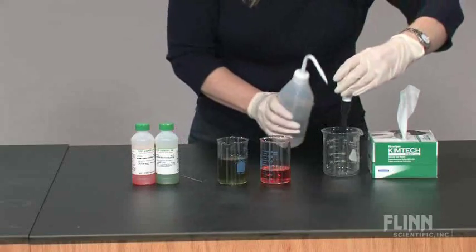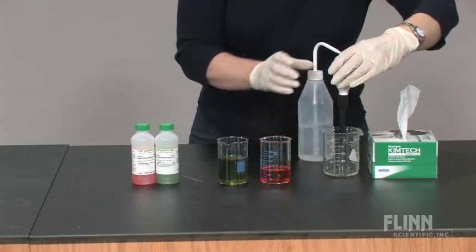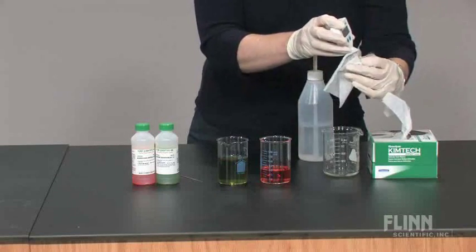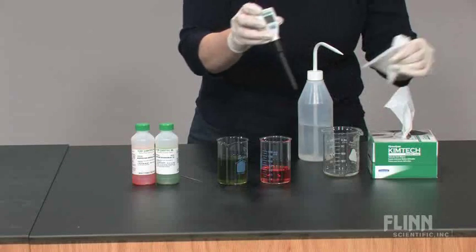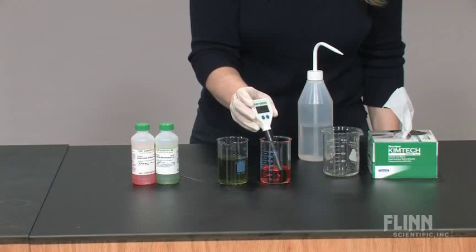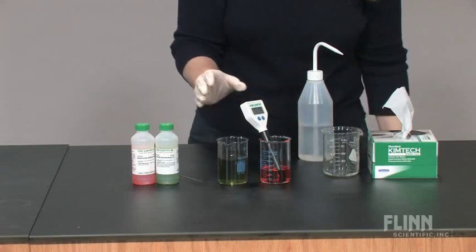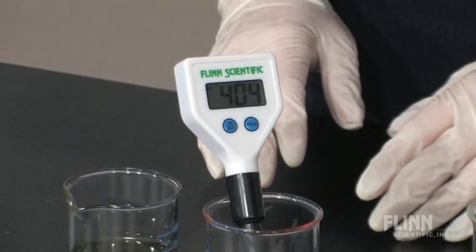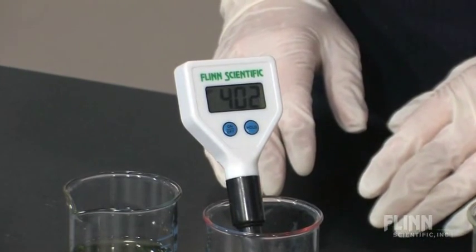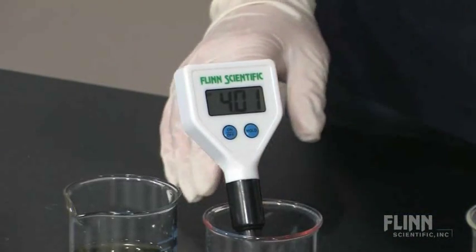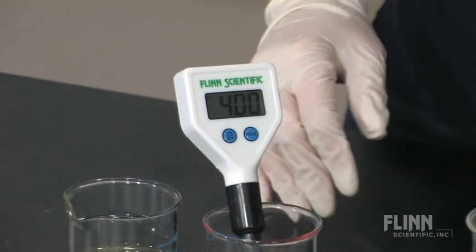Rinse the electrode with distilled water and blot dry. Immerse the electrode in pH 4 or pH 10 standard buffer solution. Once the display stabilizes, which may take approximately one minute, remove the pH meter from the buffer solution. Always use fresh buffers for calibration.